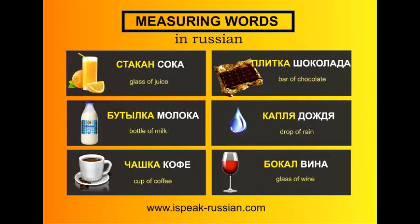Now the second group of words. Стакан сока — glass of juice. Плитка шоколада — bar of chocolate. Бутылка молока — bottle of milk. Капля дождя — drop of rain. Чашка кофе — cup of coffee. Бокал вина — glass of wine.